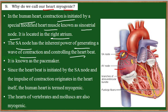The electrical signal is passed, and when this electrical impulse reaches the chambers, the chambers contract and relax. This contraction and relaxation of the chambers is called heartbeat. The heartbeat is under the control of the sinoatrial node located in the right atrium. Since this node is made up of cardiac muscle, it is called the pacemaker, and this pacemaker initiates the impulse of contraction and relaxation.